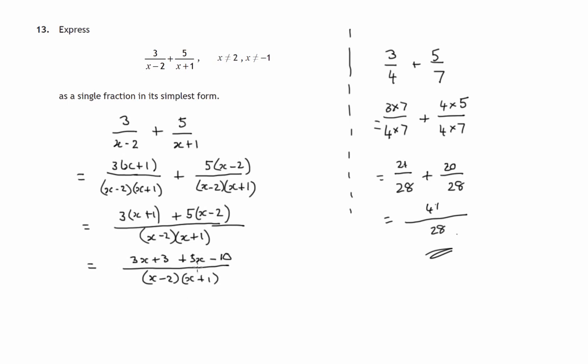And 3x plus 5x is 8x. 3 minus 10 is -7. So we've produced 8x-7.